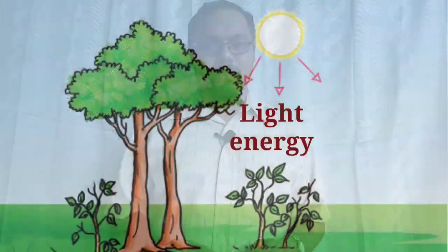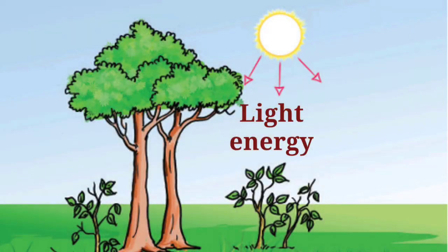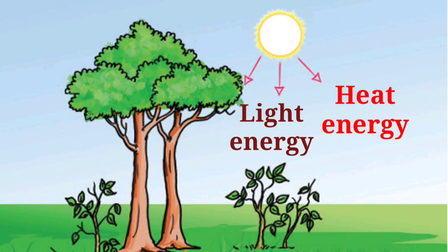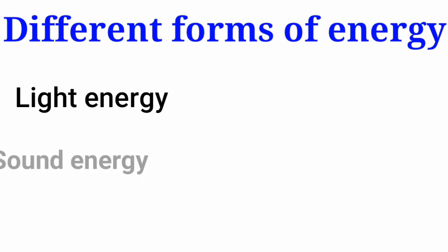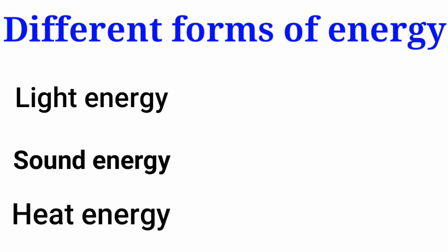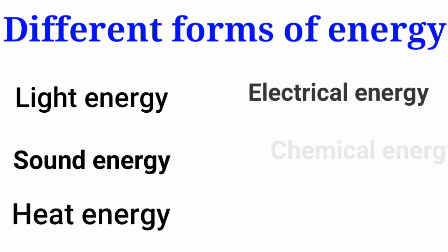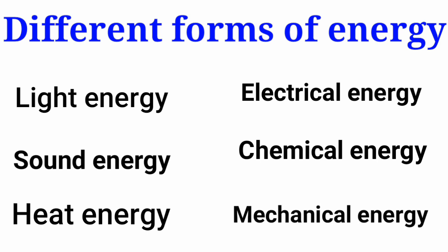During daytime we can see objects because of sunlight — yes, light is a form of energy. Not only light, we are also getting heat from the Sun, which is also a form of energy. So let's check the different forms of energy: light energy, sound energy, heat energy, electrical energy, chemical energy, and mechanical energy.